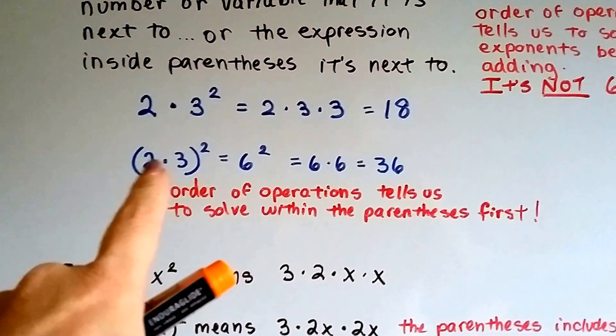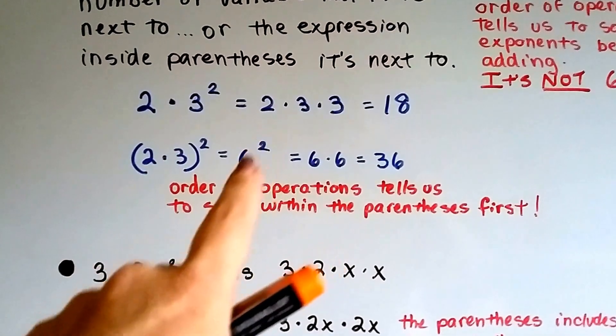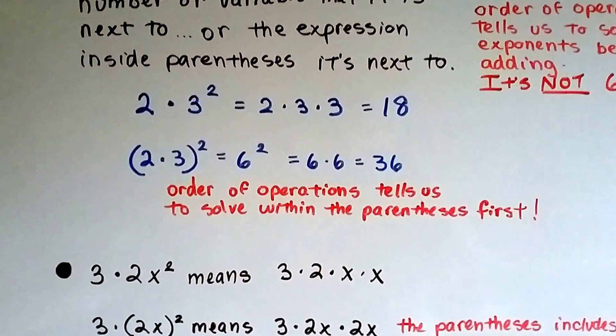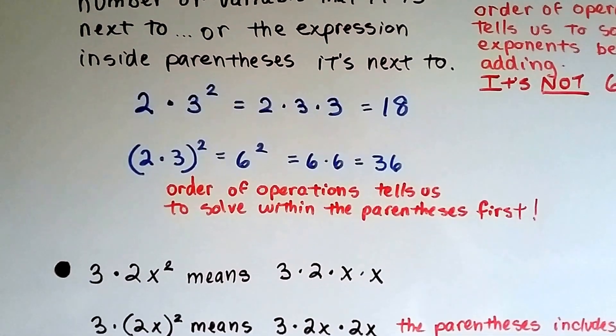Doing inside the parentheses, we get 2 times 3 is 6. So now we have 6 to the second power. 6 times 6 is 36. That's very different. See what happens with the parentheses?